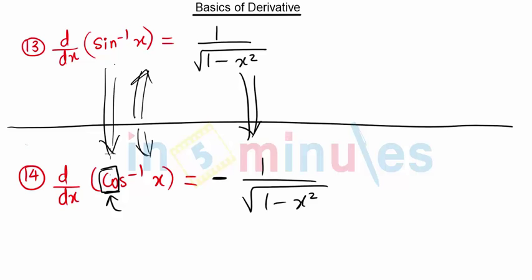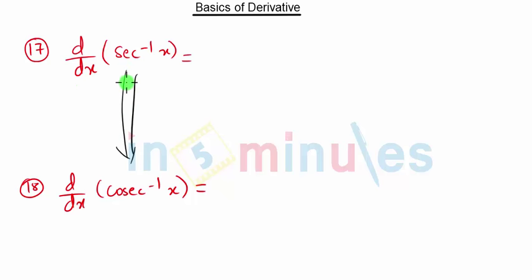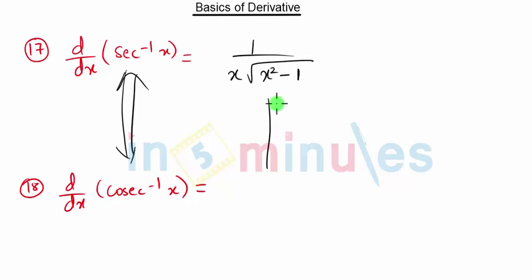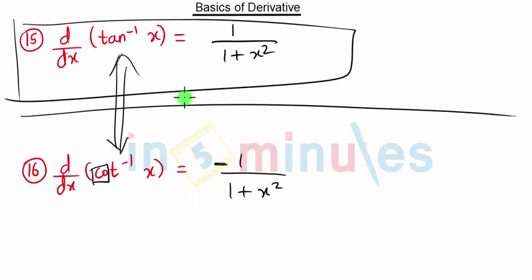After this, sec and cosecant inverse form the derivative pair. The derivative of sec⁻¹ x is 1 upon x times root of (x² minus 1). The derivative of cosecant⁻¹ x remains the same but is negative since it starts with 'co'. You only need to remember the formula for one of each pair; the other is just the negative. These are the basic derivative formulas you need to remember for solving problems in Mathematics 2. Stay tuned for our future lectures.